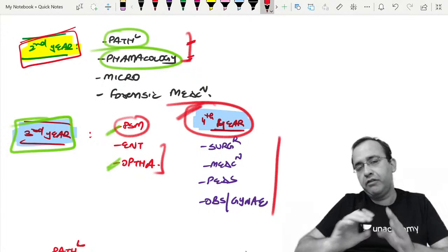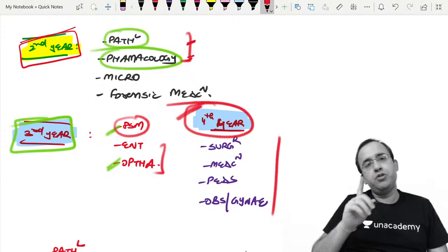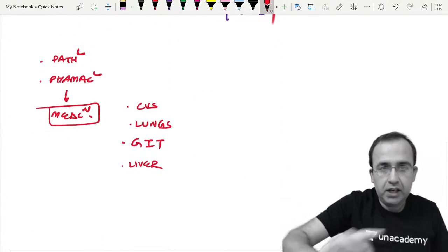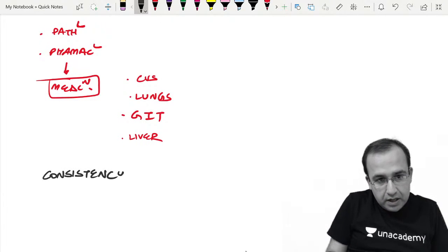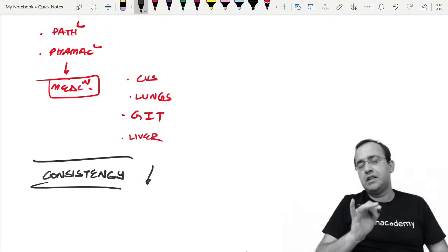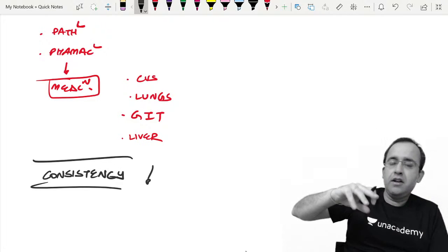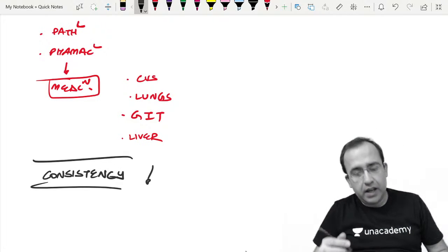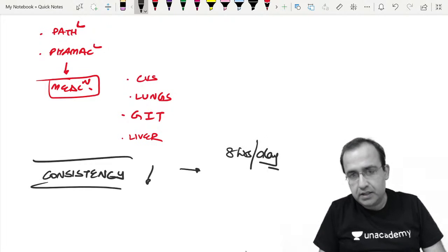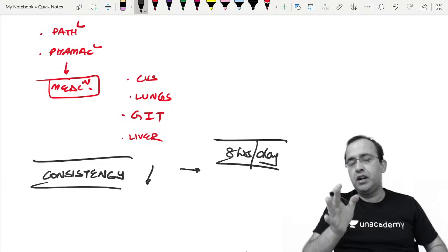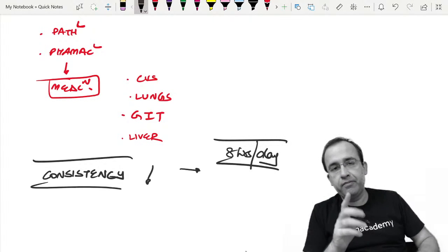At any point, consistency is more important than smartness. There is absolutely no substitute for consistency. Don't do this: on particular two, three days you are studying ten to twelve hours, then you take a two day break, then again study twelve hours. Instead of doing that, I will any day prefer an eight hour per day study schedule from you, because if you are sitting for eight hours, your effective output will be about four to five or five to six hours.